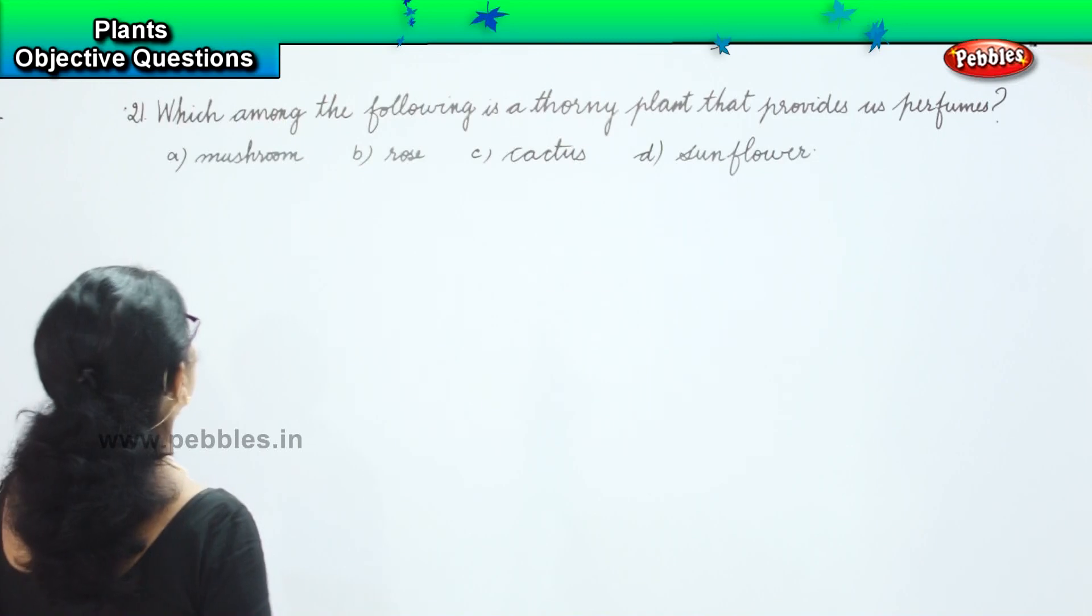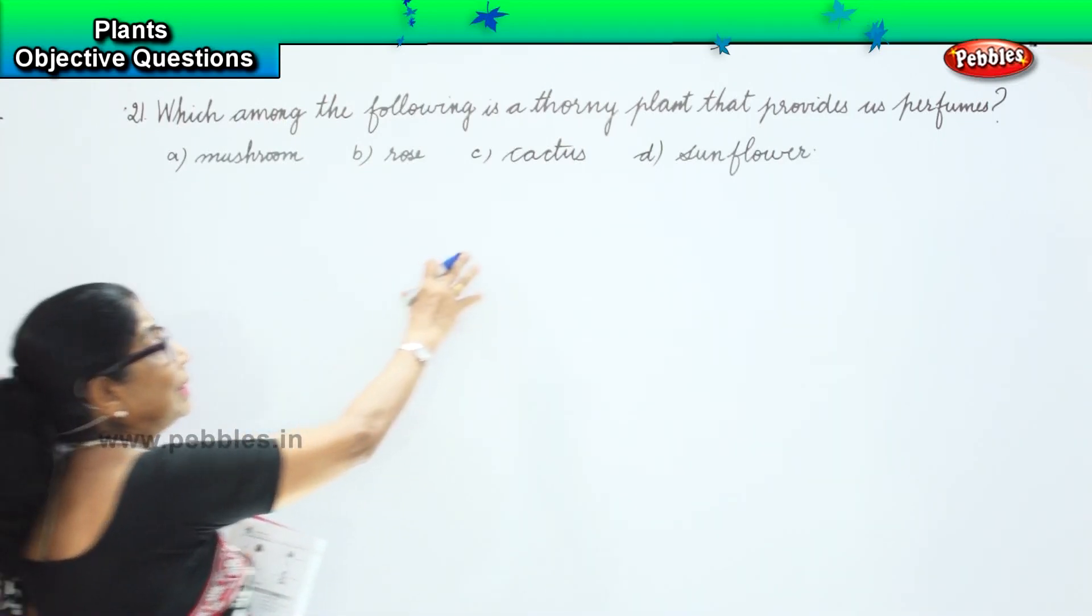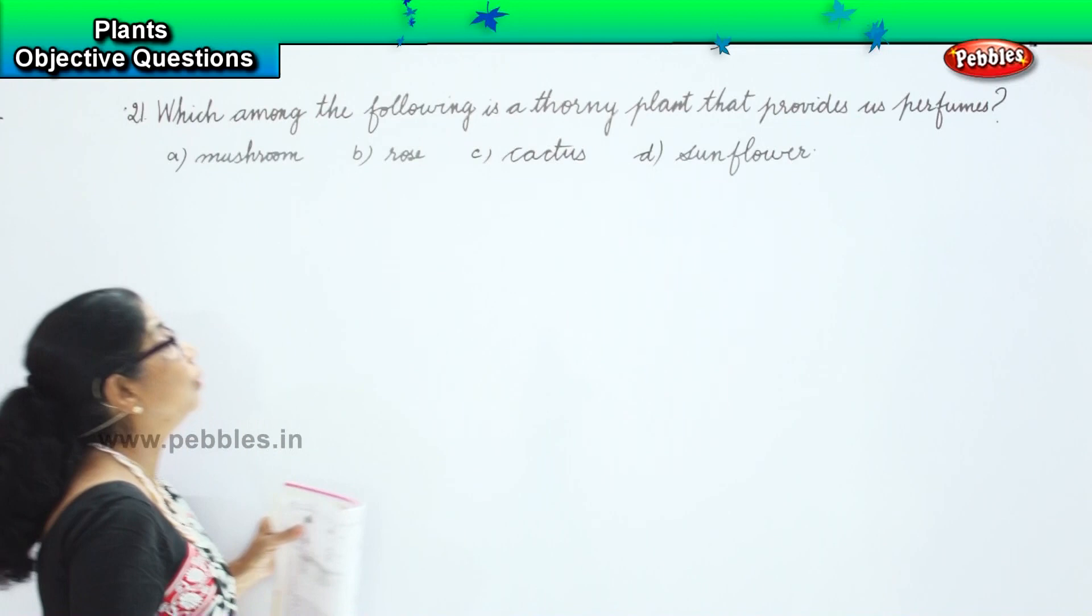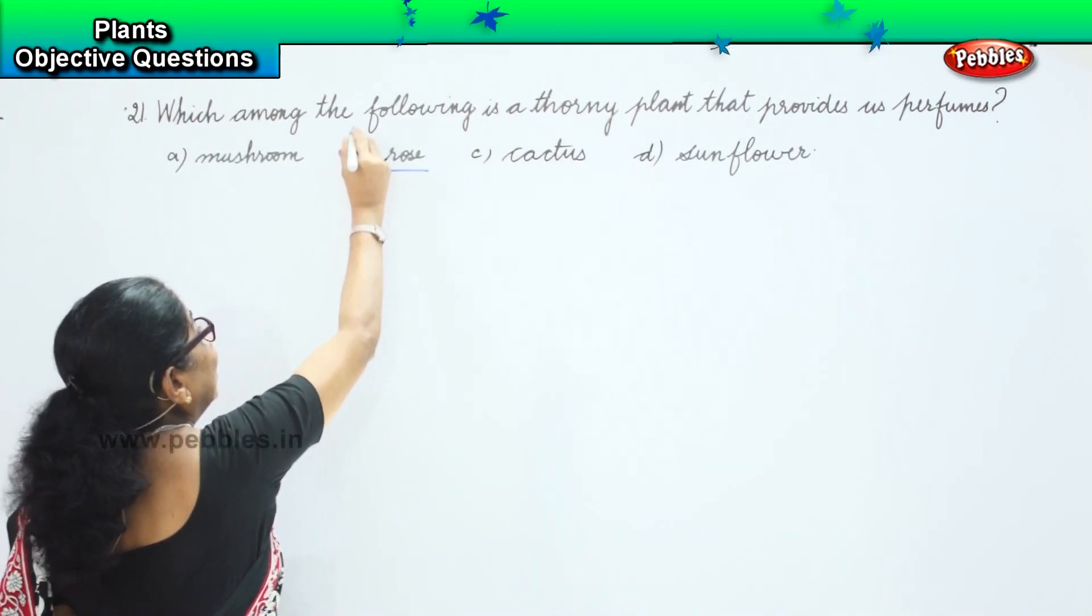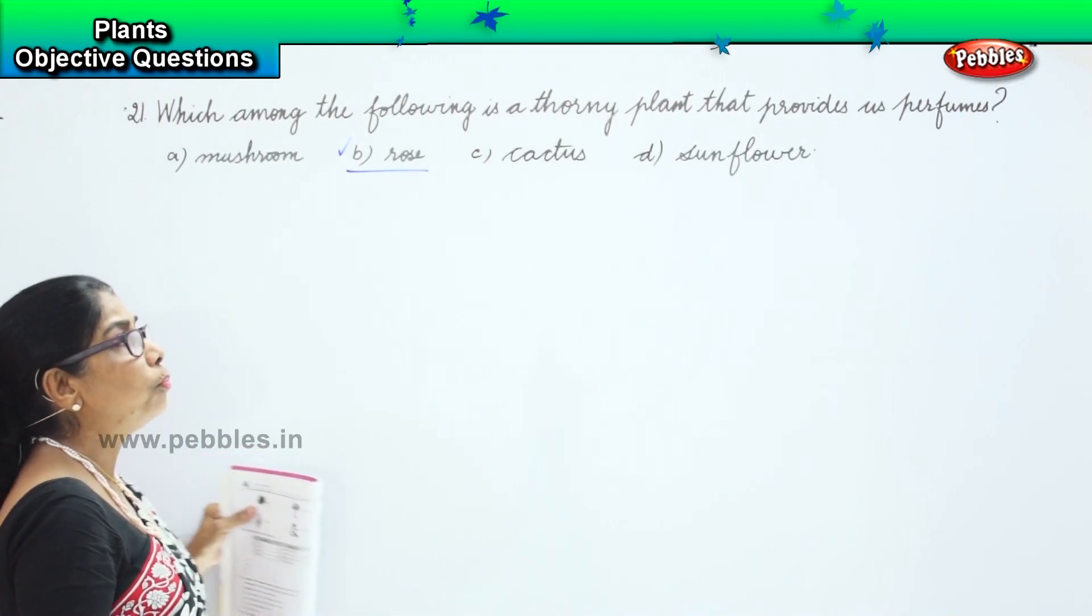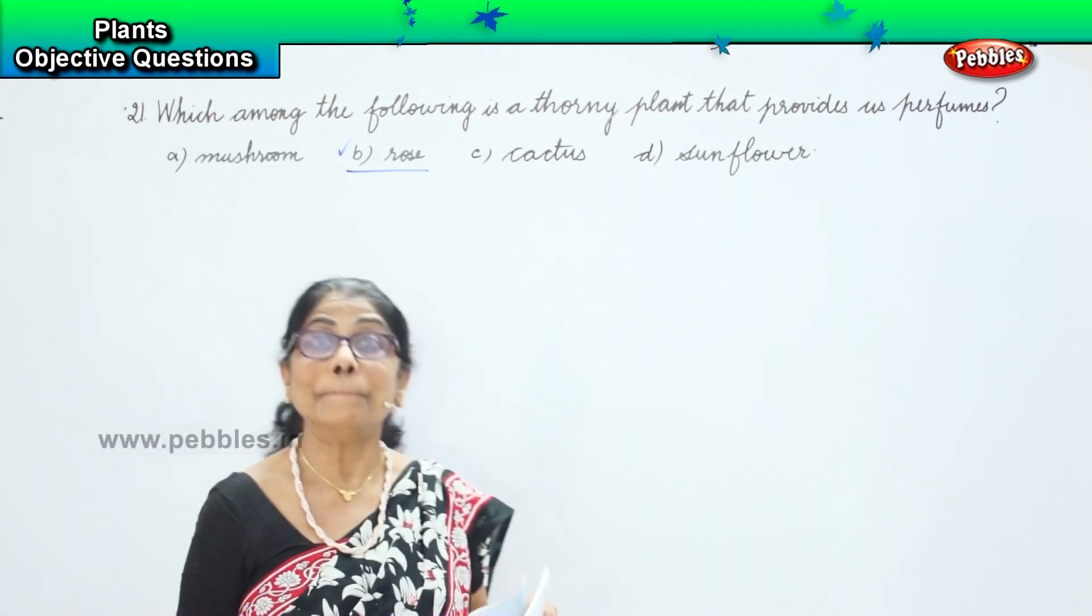A, rose. Is it mushroom, cactus, thorny, sunflower? No. The option B, rose, is a thorny plant and it also provides us with perfume.